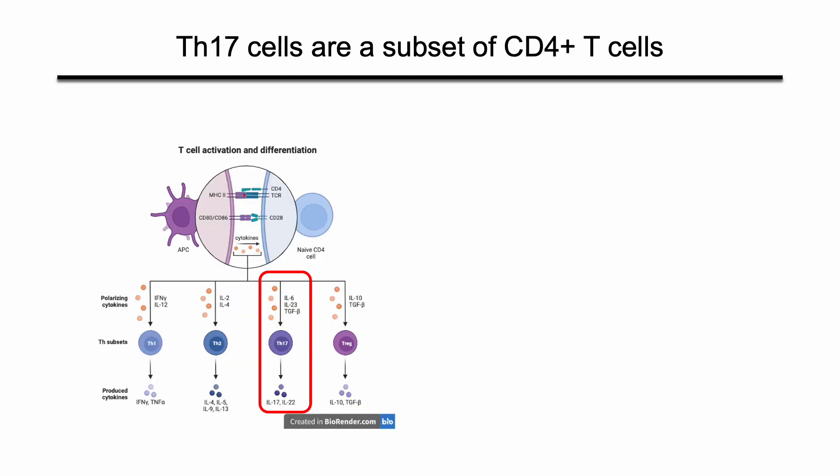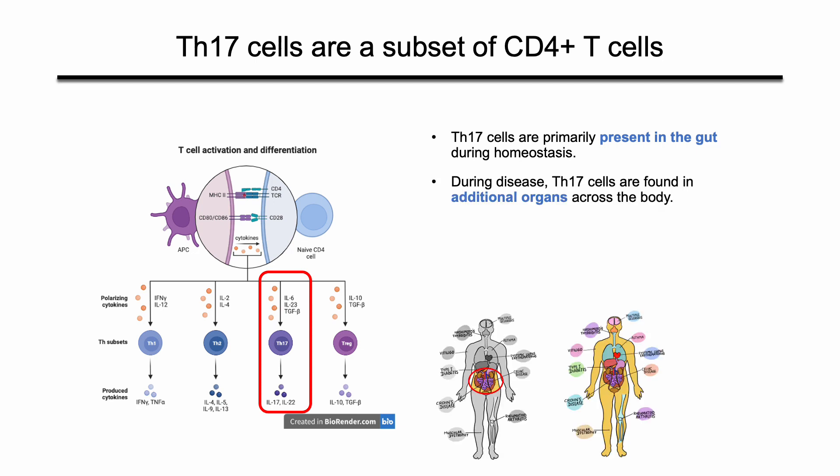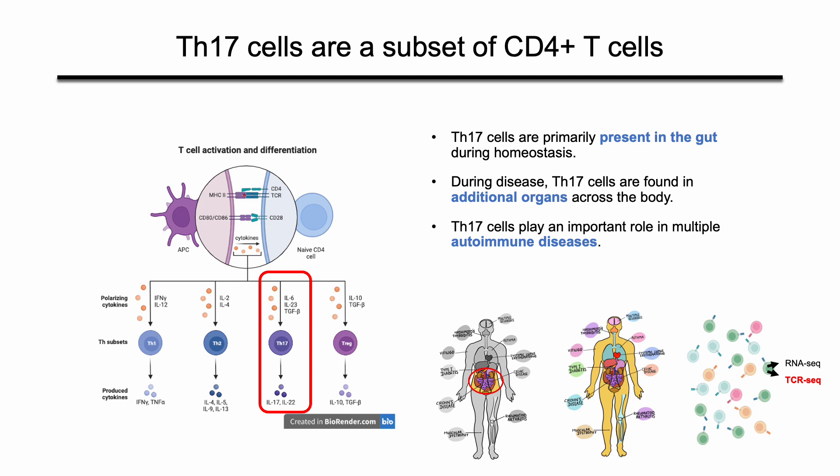Th17 cells are a subset of CD4 T cells that are defined by their production of interleukin-17. They are primarily present in the gut during homeostasis. However, during disease, they can also be found in additional tissues across the body, and they play an important role in multiple autoimmune diseases. Whether they are the inducers of tissue inflammation remains unclear. Therefore, we wanted to leverage combined single-cell RNA and TCR sequencing to review the plasticity of Th17 cells across and within tissues, as well as their systemic immune response during autoimmunity.